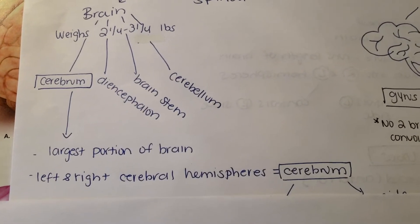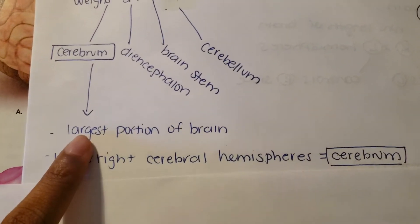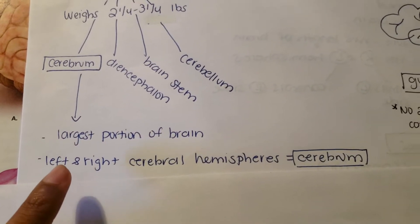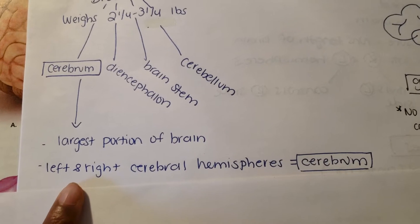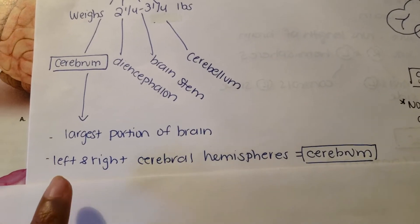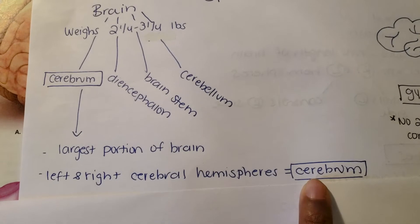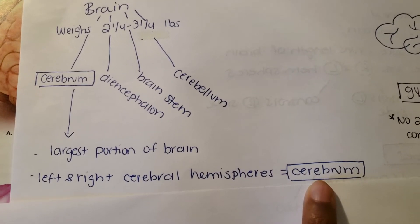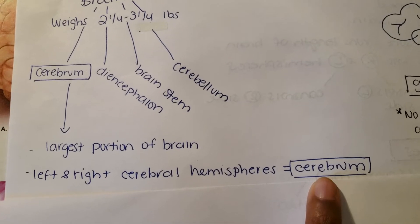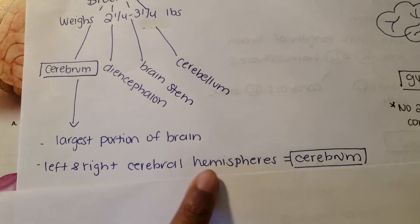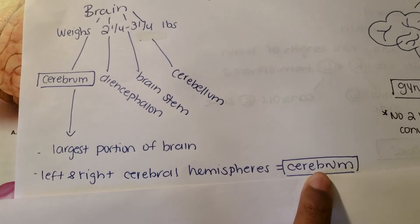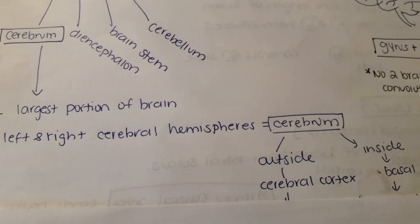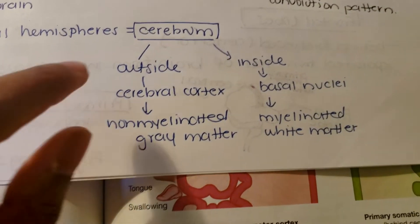The cerebrum is the largest portion of the brain because it includes both the left and right cerebral hemispheres. Rather than saying 'left and right cerebral hemispheres' every time, we just say cerebrum to simplify. So the cerebrum includes both hemispheres, and when we refer to it we can just say 'it's in the cerebrum.'